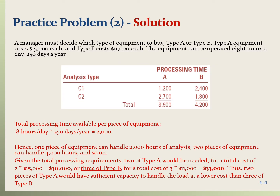Here is the solution. First, we develop a table to find the total processing time for C1 and C2 on machines A and B. For C1, it takes one hour on machine A to process one unit, and we need an annual volume of 1,200. So that's 1,200 multiplied by 1, which is 1,200 hours of processing time for machine A. For machine B, it takes two hours per unit for C1, so to process 1,200 volume we need 2 multiplied by 1,200, which is 2,400 hours.